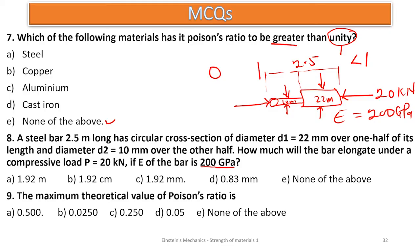Number twenty-five: the ratio of direct stress to volumetric strain in the case of a body subjected to three mutually perpendicular stresses of equal intensity is equal to the bulk modulus K. The ratio of direct stress to volumetric strain is what we call the bulk modulus.